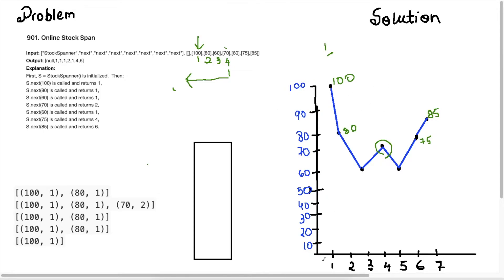So here on the graph, these are the prices and the days are below. On day one I have 100, so I just need to return one because there are no other days to compare — the default value is one. Next day is 80. We need to see if there are any days where the price was lower than 80. There is nothing lower here because 100 is higher than 80, so we return the default value one. On day three we're at 60, and there are no stocks in the past lower than 60 — this is the lowest point — so we return the default value one.